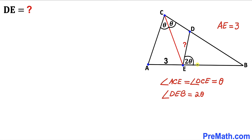Let's look at this straight angle here, which is going to be 180 degrees. We know that this angle DEB is 2 theta, so therefore angle AED has got to be 180 degrees minus 2 theta.